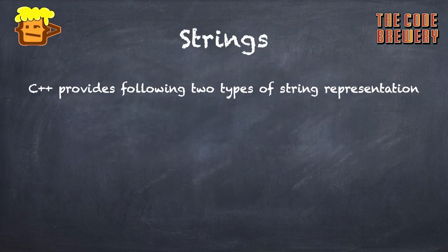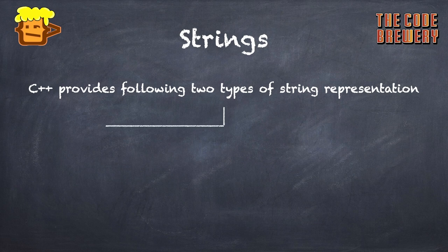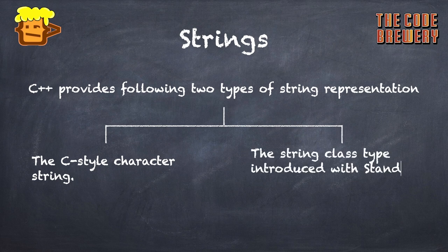C++ provides two types of string representations. First one is the C-style character string and second one is the string class type introduced with standard C++.